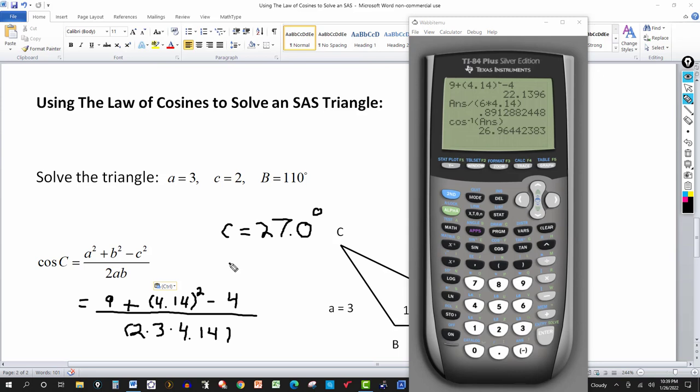And then of course angle B was given to be 110 degrees, and now I know angle C to be 27.0. So add those angles up and subtract from 180. And I get angle A to be 43.0 degrees.